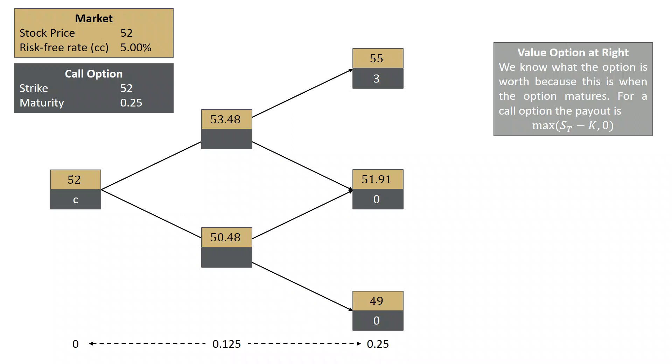So when the stock is at 55, the option's worth 3. The stock's at 51.91, the option's worth 0. And if the stock's at 49, the option's also worth 0.